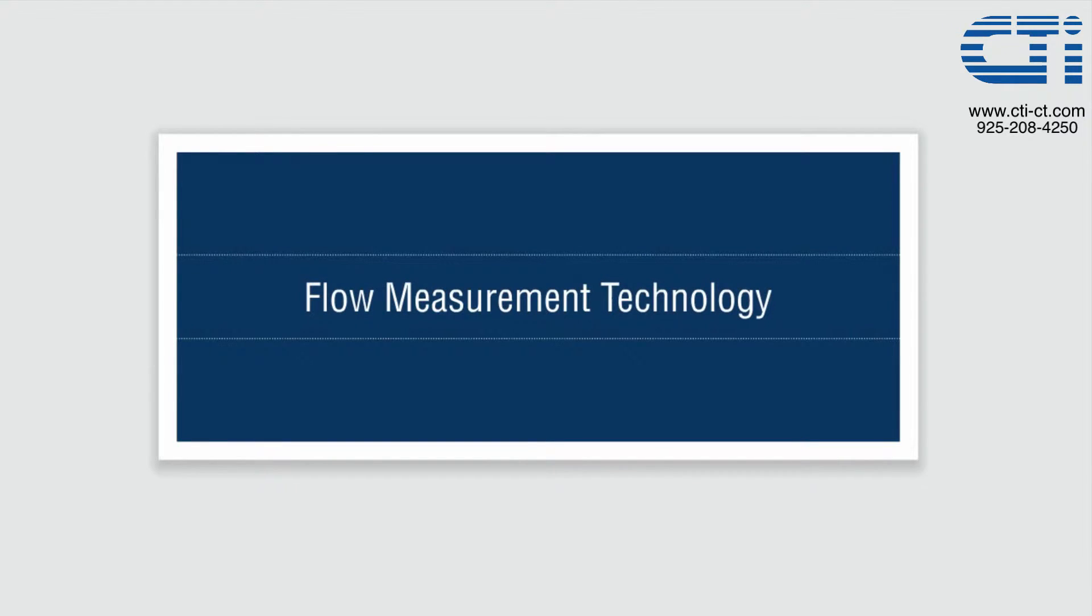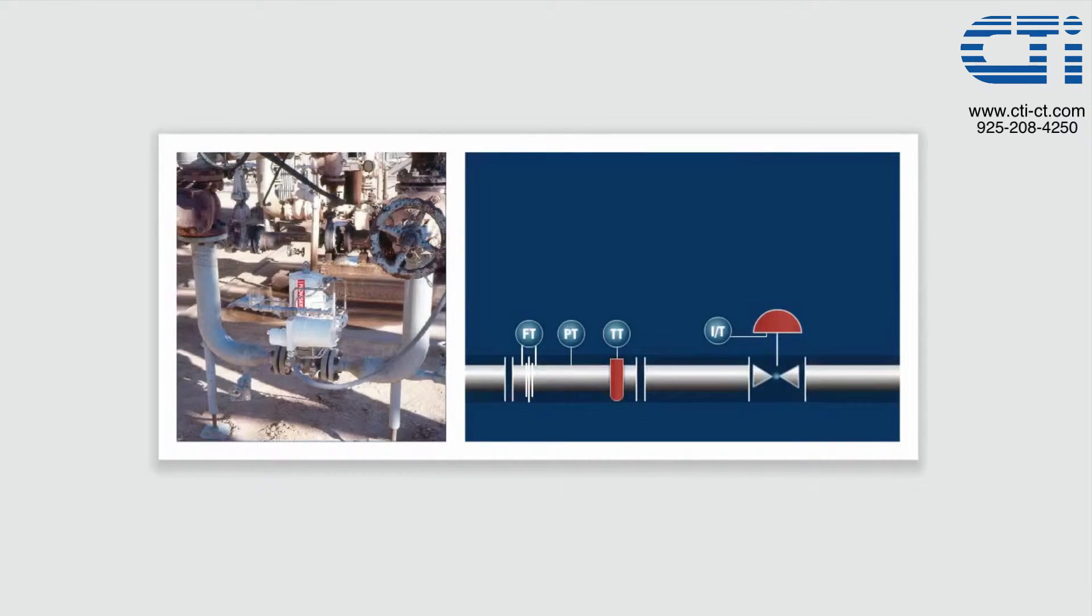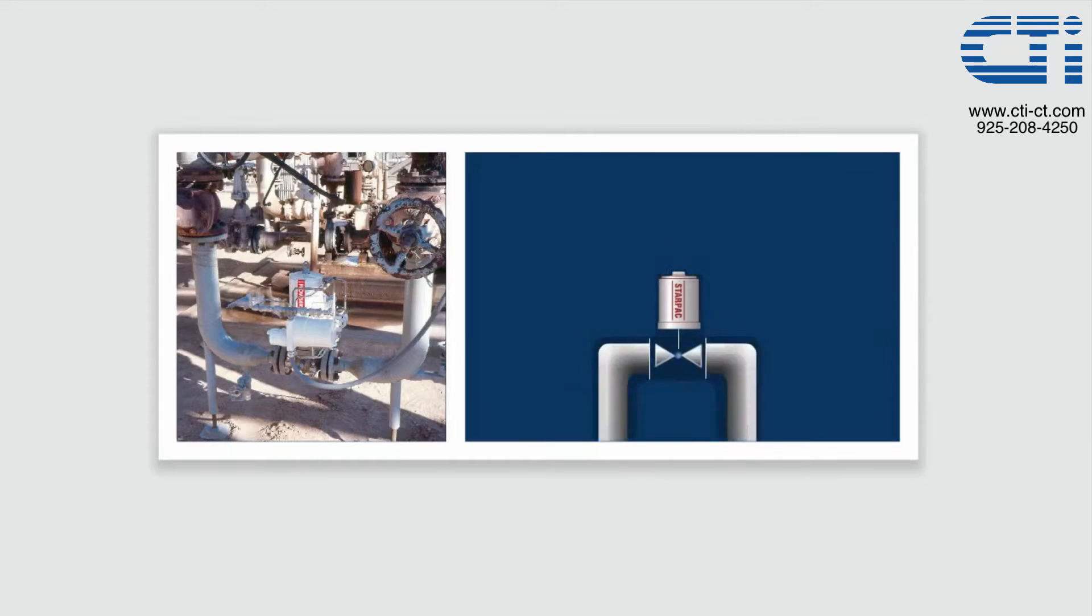Another benefit of the StarPak is the technology it utilizes to calculate a mass flow rate. This is dependent upon the natural turbulence that is created as fluid passes through the valve body, thereby generating its own metering run. This eliminates the need for long straight runs of pipe that traditional loops required to get an accurate flow measurement.